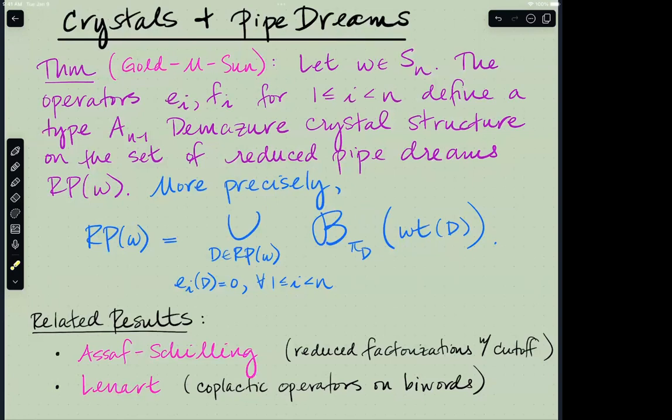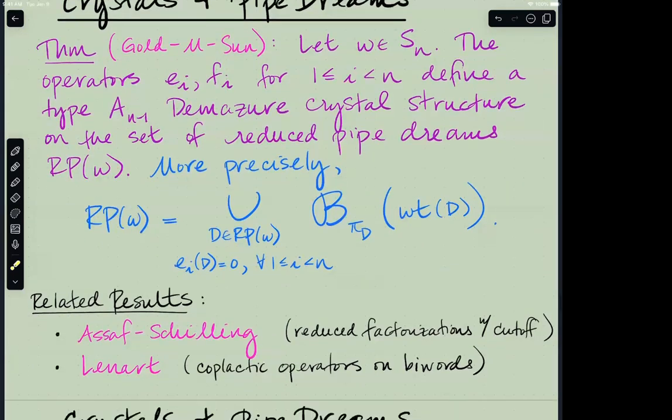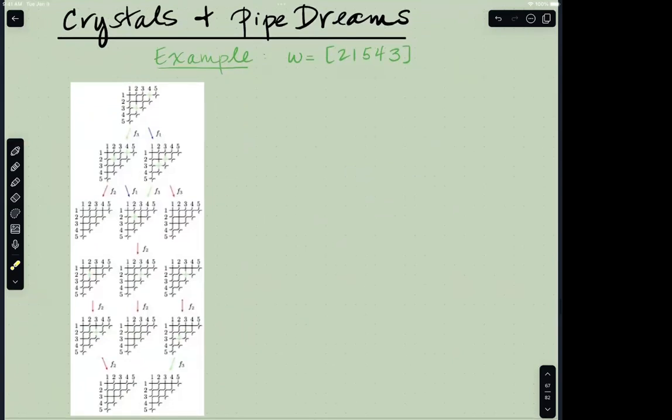At this point, I should say that this crystal structure on the monomials of Schubert polynomials has been worked out before by more than just these three people, but in a very explicit way in terms of the model of reduced factorizations with cutoff. Looking at reduced words meeting certain criteria, that was work of Assaf and Schilling. Also maybe 20 years ago, Christian Lenart wrote a paper that included the ideas behind this theorem or the spirit of the operators, but the details and proofs there were carried out in the model of biwords, more of a tableau model, using the coplactic operators on biwords to make similar combinatorial claims. There is definitely related work using different combinatorics.